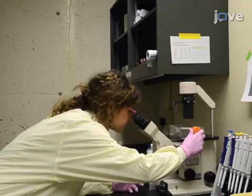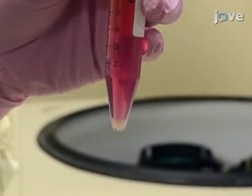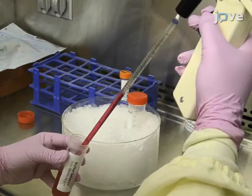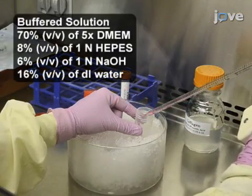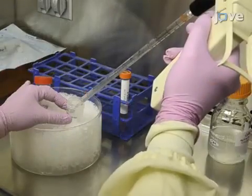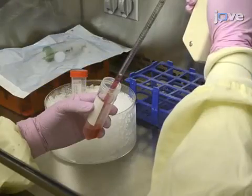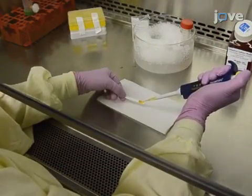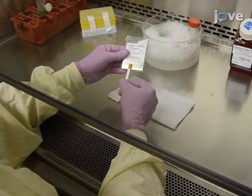Harvest the cells and resuspend them at 4 million cells per milliliter in complete culture medium. Next, combine one part buffer solution, two parts sterile collagen solution at four grams per liter, and one part cell suspension in this order. Measure the pH of the mixture and ensure it is between pH 7.0 and 7.4.